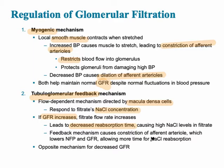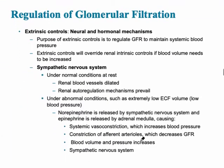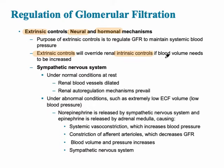Both of these mechanisms are equally important, and they can be controlled via extrinsic controls — outside the kidney — which utilize both nerves and hormones. The purpose is to regulate GFR to maintain systemic blood pressure. Extrinsic controls always override the intrinsic controls within the kidney. If the body is going into hypovolemic shock, for example, the extrinsic controls play a role.